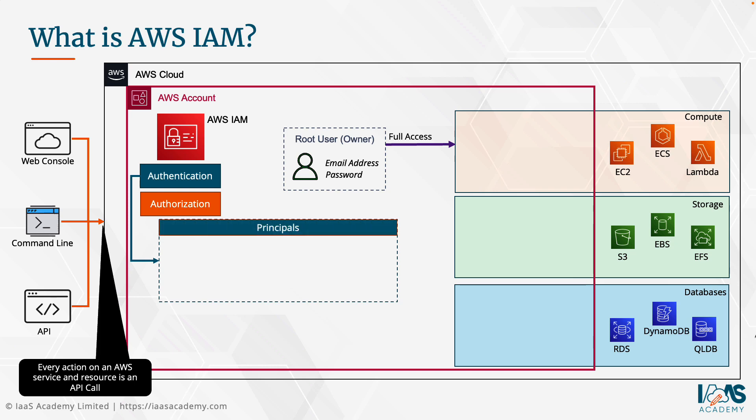These principals come in different forms. We've got IAM users — these could be human users, like your colleagues, such as George and Alice. You've also got something called an IAM role, which is an ability to assume a set of permissions to perform a set of actions that you define. We'll discuss IAM roles in a lot more detail in a later video.